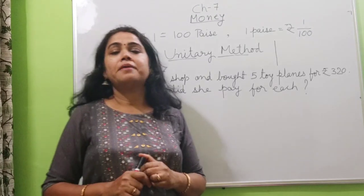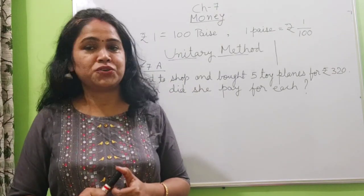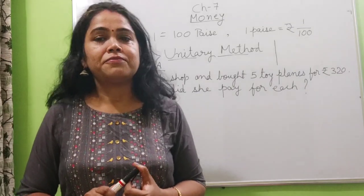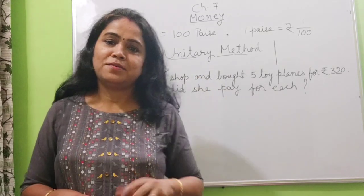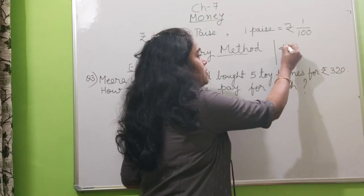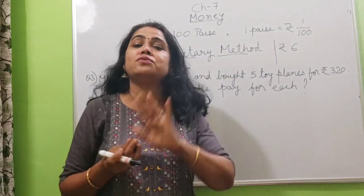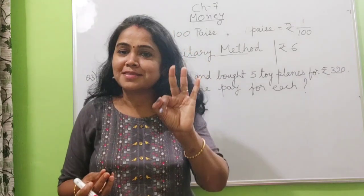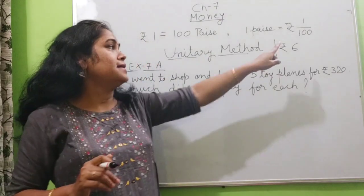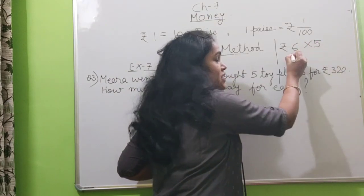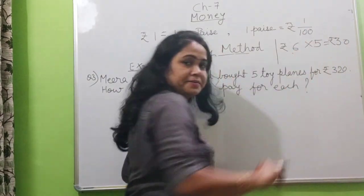Suppose your mother told you to buy 5 toffees and she has given you 100 rupees. So you went in the shop and you told the shopkeeper that uncle give me 5 toffees and uncle told that cost of 1 toffee is rupees 6. So what will you do? You will multiply 6 five times because you want 5 toffees. So 6 plus 6 second toffee plus 6 third toffee plus 6 fourth toffee plus 6 fifth toffee. So you will multiply 6 by 5 and you will get, you will give 30 rupees to the shopkeeper.